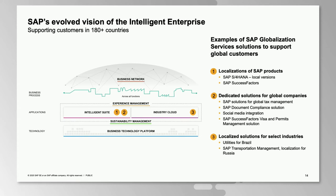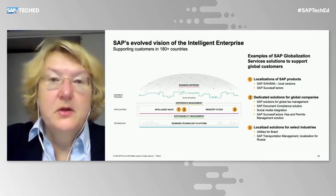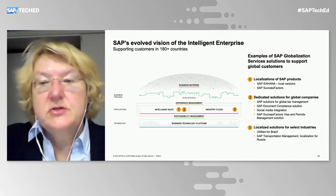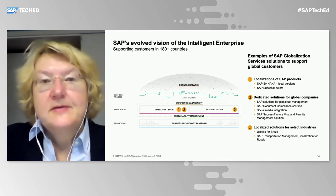From the perspective of globalization services, what is the effect of localization and globalization on the intelligent enterprise? On one hand, we are localizing SAP products to make them relevant in local markets — this means translation and application of all regulatory changes. On the other side, we are running dedicated solutions for global companies: global tax compliance, document compliance for secure exchange of documents with governments or other parties, social media integration, SuccessFactors visa and permits management solutions.